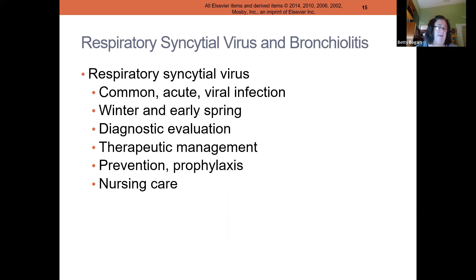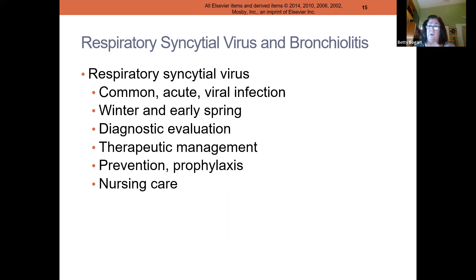RSV is also called bronchiolitis — the names are synonymous. It goes from fall and winter into early spring. We do a nose swab to confirm, try to clear secretions, and suction before feeds. For children who are more compromised — cardiac, premature, cystic fibrosis — we give the Synagis vaccine once a month during those high-risk times.